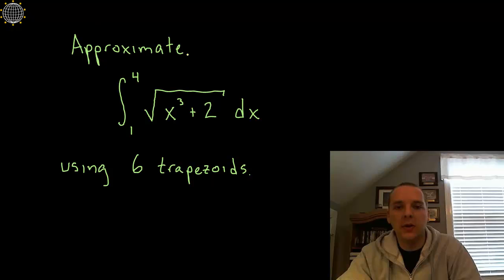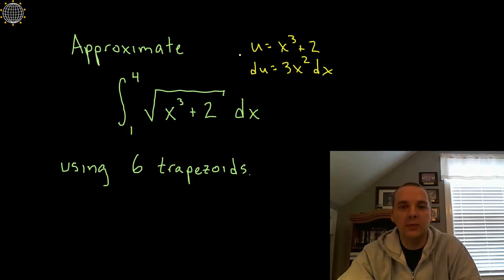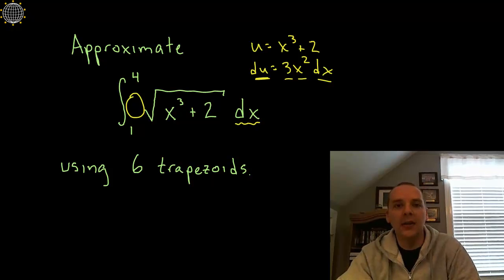So you start down that path and ask yourself how would I integrate this. The only thing that remotely seems possible is a u substitution approach. If u was x cubed plus 2, then du would be 3x squared dx. This is nice because you'd have the square root of u, but notice you don't have anything else outside. You can't fashion a du. We need 3x squared dx but all we have is a dx. You could fix the 3, but there's no way to fix that x squared. We're not going to be able to integrate this.